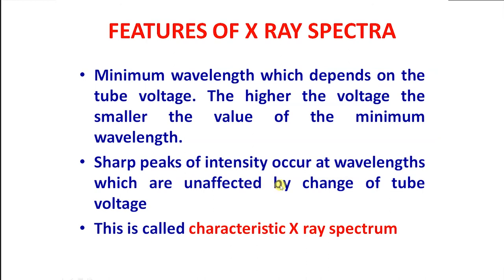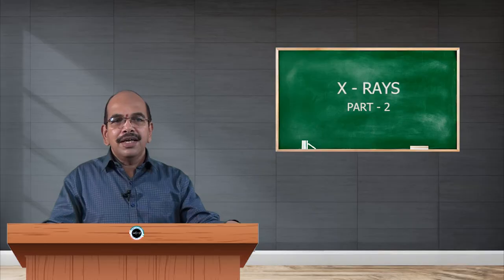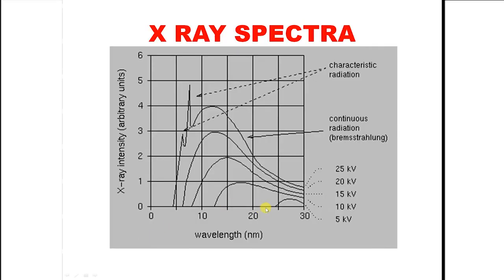This is called characteristic spectrum. So just I go through the graph once again. See, these are the points corresponding to minimum wavelength or maximum intensity. When you raise the accelerating potentials, these values are shifted towards lower values or higher frequency values.